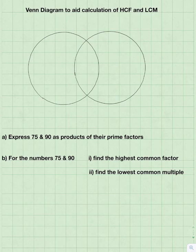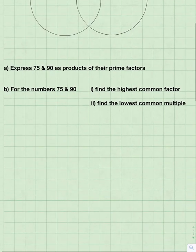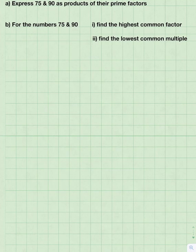So let's start with part A. Express 75 and 90 as products of their prime factors. The easiest way of doing this is via a factor tree as follows.